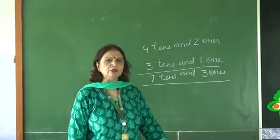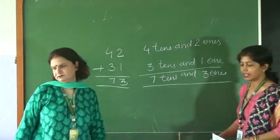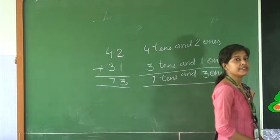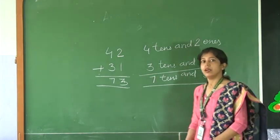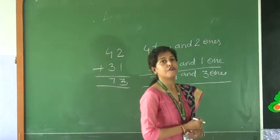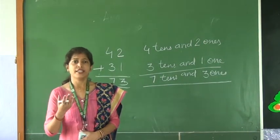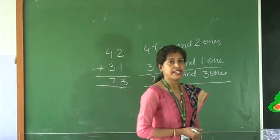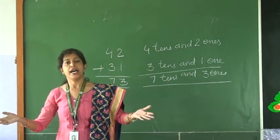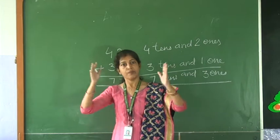Now I call the next ma'am to explain ascending and descending order in an interesting way. Hello children, hope you all are fine. We have seen that ma'am has nicely explained about expanded form in which you learned the place value of tens and ones. Now I am going to teach you ascending order. In ascending order we arrange the numbers from smallest to biggest.